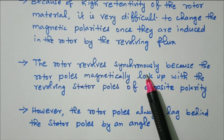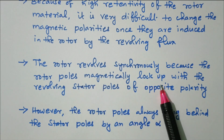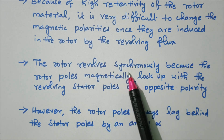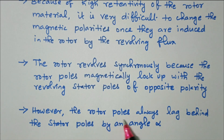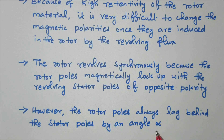The rotor revolves synchronously because the rotor poles magnetically lock up with the revolving stator poles of opposite polarity. However, the rotor poles always lag behind the stator poles by an angle alpha. Based on the shaded pole, the flux in the shaded pole has a 90-degree phase difference with the main flux, so there is a phase difference of angle alpha between the stator and rotor poles.